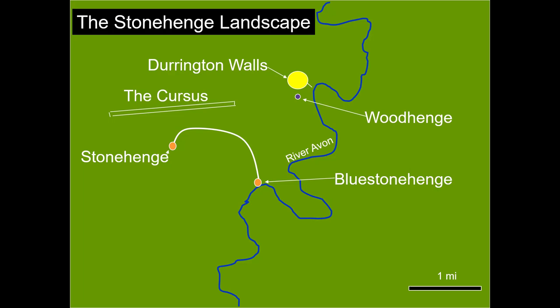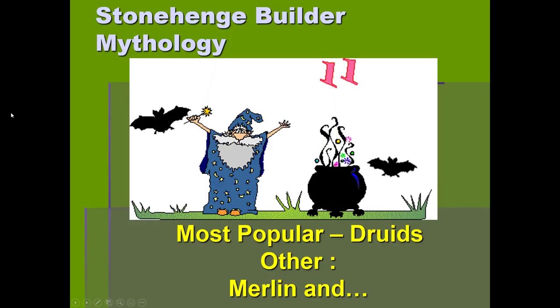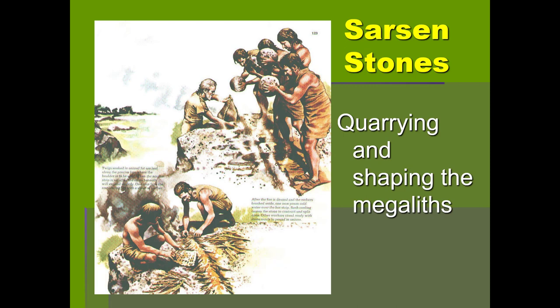The next slide shows some artist renditions of how some of the giant trilithon stones were actually shaped. What's inconvenient is that all of the materials used by the Stonehenge builders were biodegradable, so at best these are all speculations. You see some Neolithic people attempting to shape the sarsen sandstones used for the trilithons — the big three-stone structures — using stones and animal fat to shape them into roughly rectangular forms.